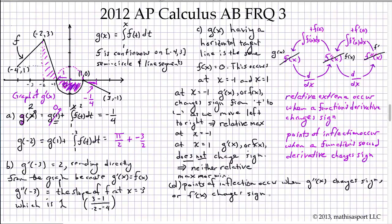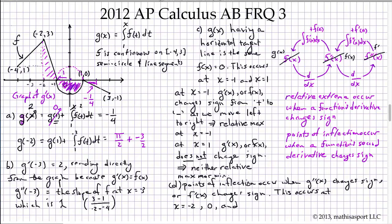Where does F prime change sign? The slope of F is positive here, then becomes negative, giving a point of inflection at x equals negative 2. The slope is negative here and continues negative, then becomes positive, giving another point of inflection at x equals 0. Finally, the slope is positive then becomes negative, giving a last point of inflection at x equals 1.